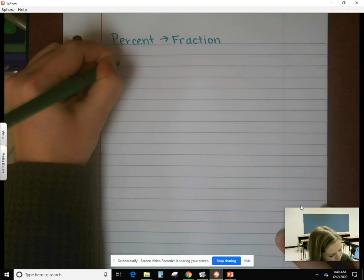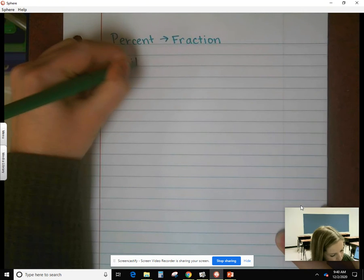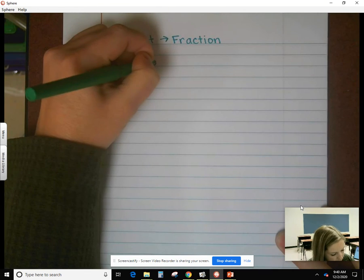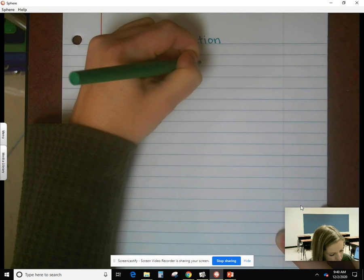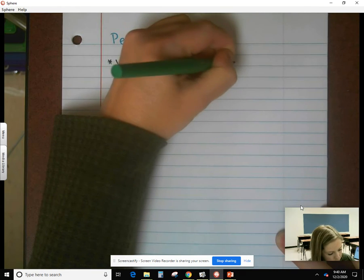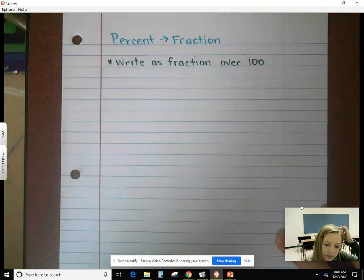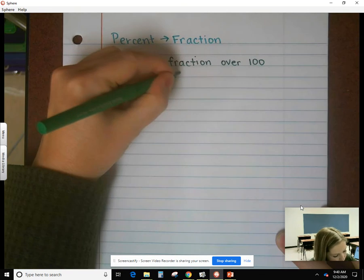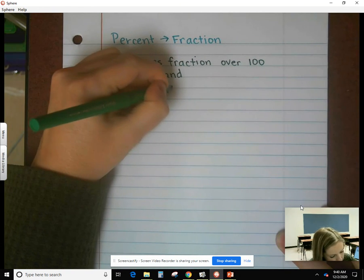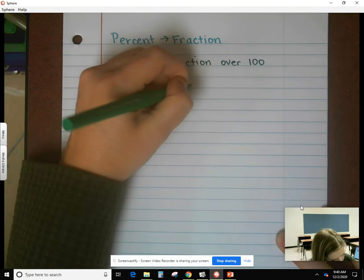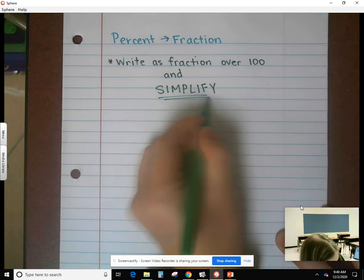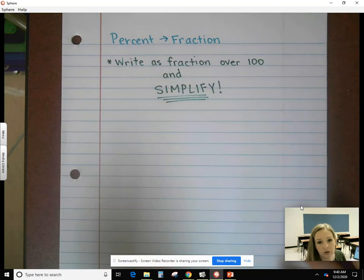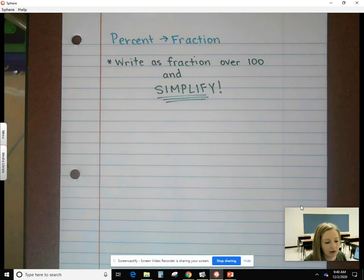You're going to write the percent, whatever the number is, write it as a fraction over 100, and then you have to simplify. I'm going to write that nice and big, all capital letters. That is what people always forget to do, so don't forget to simplify your answer.